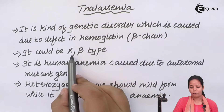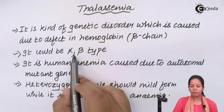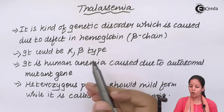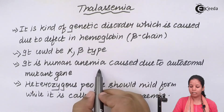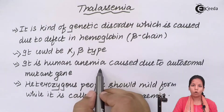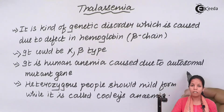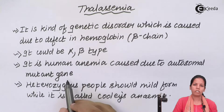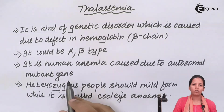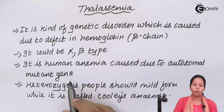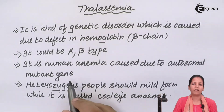Thalassemia can be of the alpha kind or the beta kind. This anemia is caused by an autosomal mutant gene, and this mutation in the gene may result in a protein that is non-functional or irrelevant.